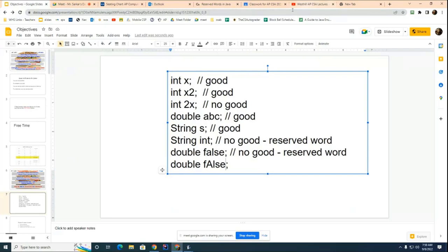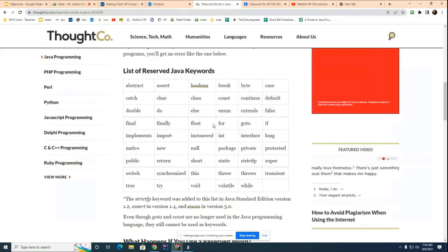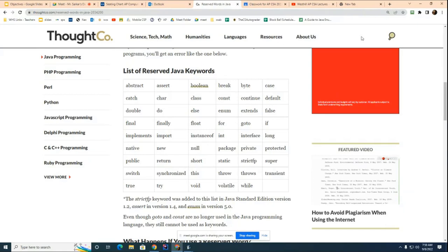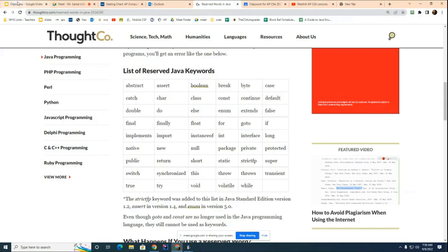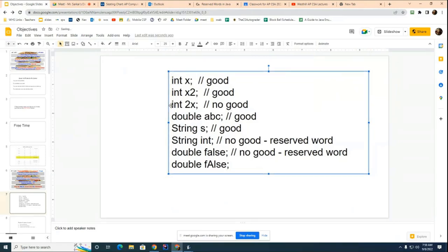So now what you have to do for me over the next two weeks is you have to memorize this list of words and you also have to memorize a bunch of rules which I will point you to that tells you for example that this is no good. For example, you need to understand that you can't start a variable name with a number.